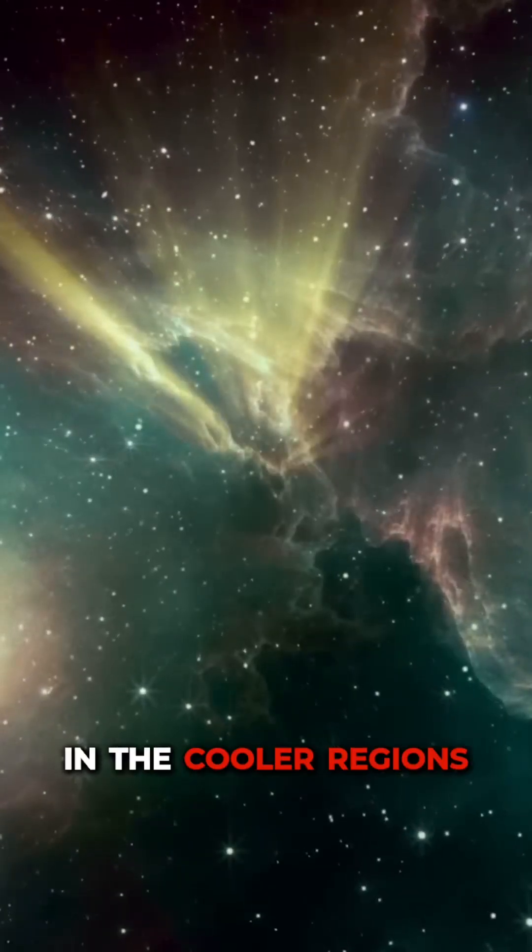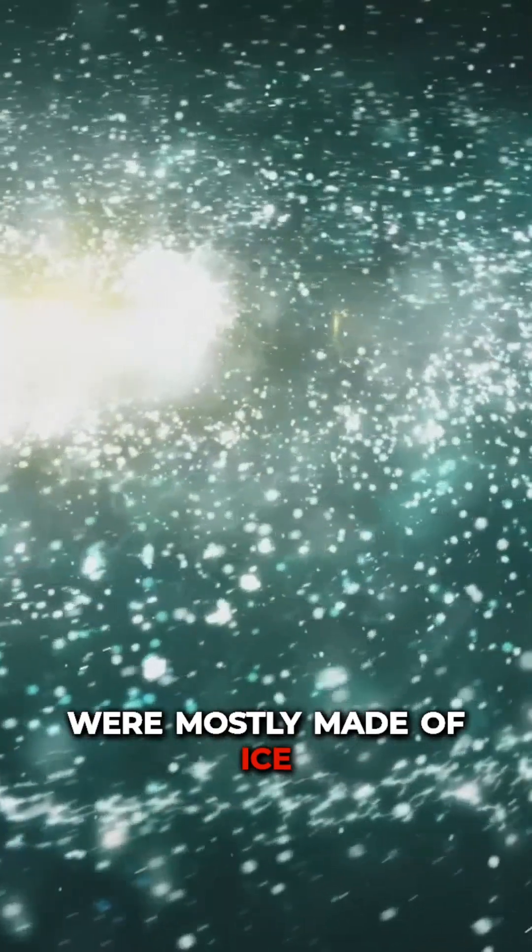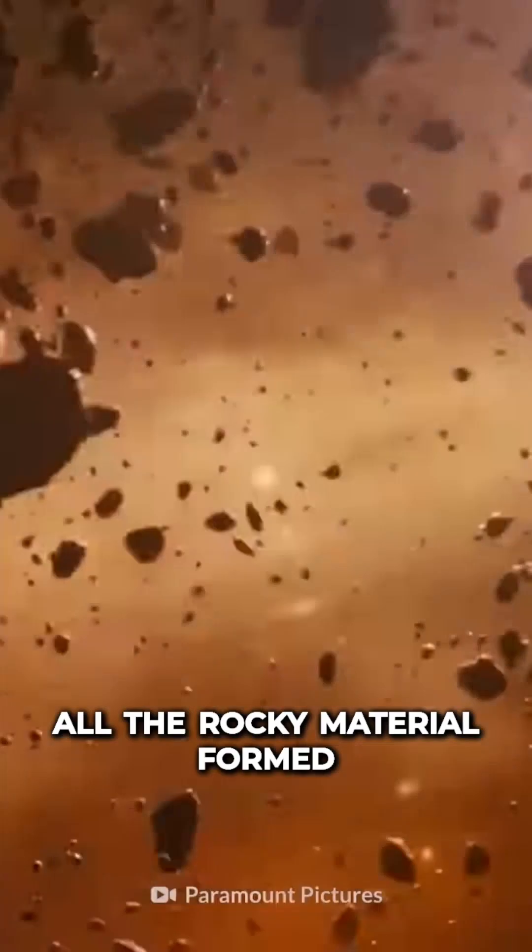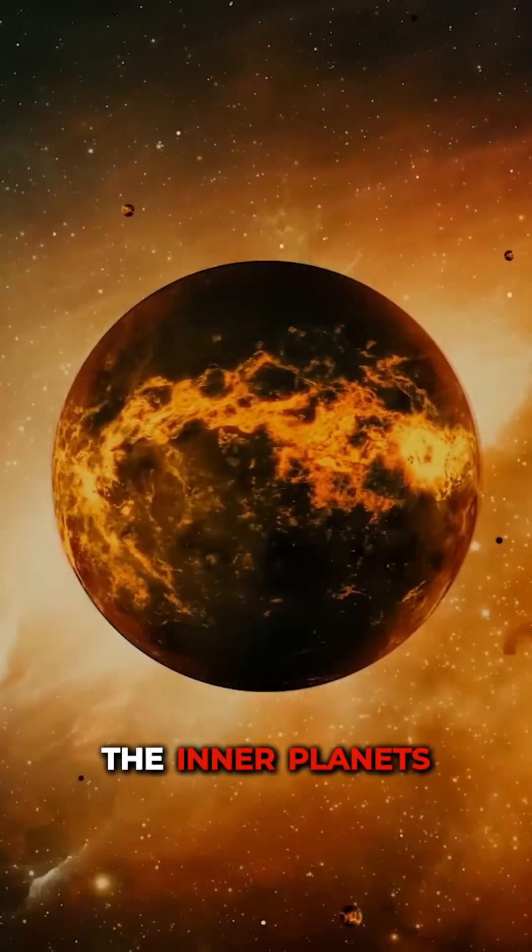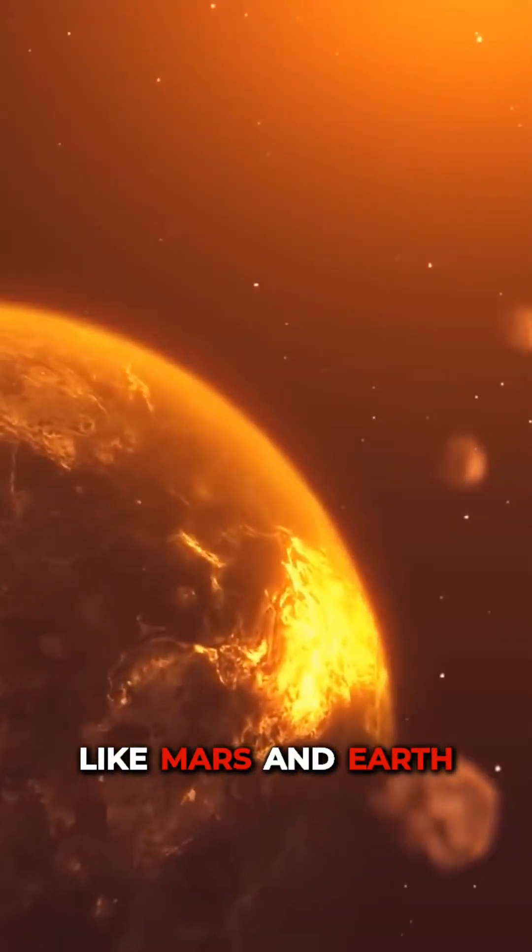The clumps in the cooler regions of the solar system were mostly made of ice, liquids, and gases. Closer to the Sun, all the rocky material formed the inner planets like Mars and Earth.